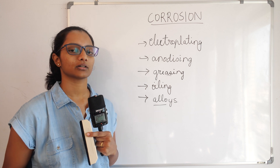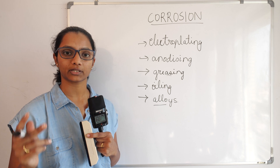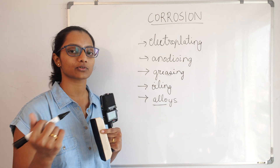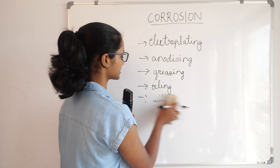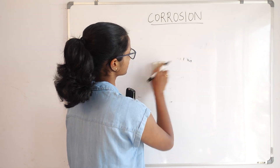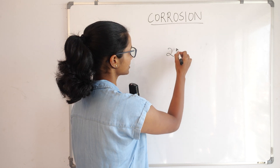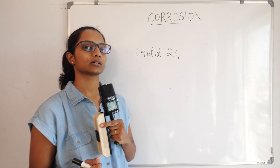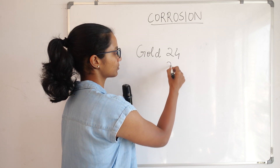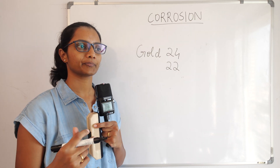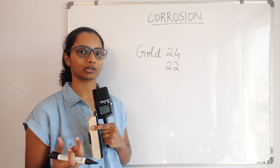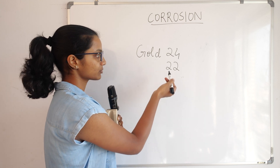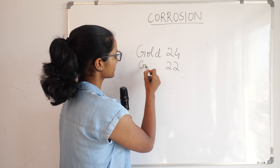Alloys are nothing but a homogeneous mixture of two different metals, or a metal and a non-metal. Alloys have different properties from their original pure metal. For example, gold in its pure state is 24 karat, which is very soft. To make ornaments, goldsmiths use 22 karat gold because it is harder and easier to work with.